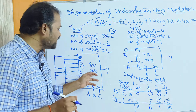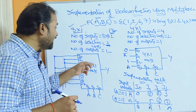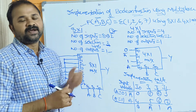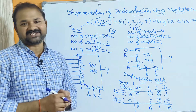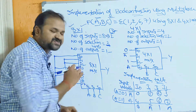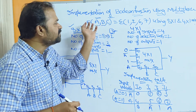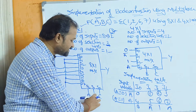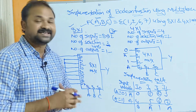Here we have an 8-by-1 MUX with 8 inputs from i0 to i7. The 3 selection lines are s2, s1, s0. In this problem, a, b, c are the variables, so a, b, c are nothing but the selection lines.